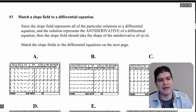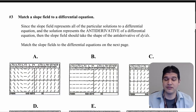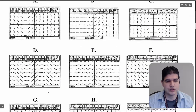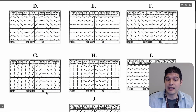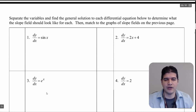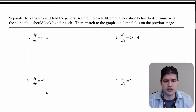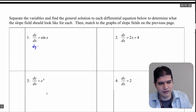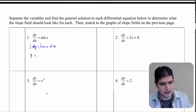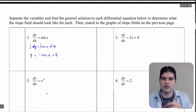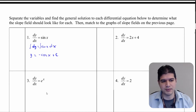In this section what we want to do is match a slope field to a differential equation. We're given all of these slope field graphs. On this page we're given a bunch of differentials. Here we have dy equals sine x dx. We want to integrate like we've been doing, so I get y or f of x equals negative cosine x plus c. Remember that plus c is what gives us these slope fields — all these possible solutions.